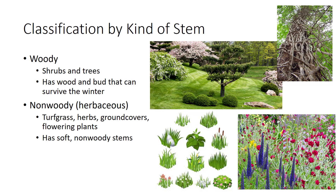Today, scientists use similarities among plants to break them down into eight groups. The first is the kind of stem. Stems can be broken down into two basic categories: woody or nonwoody herbaceous. Woody plants include shrubs, trees, and some vines, and produce wood with buds that survive above ground level during winter months. Nonwoody or herbaceous plants have soft, nonwoody stems and typically include turf grasses, herbs, ground covers, and flowering plants.